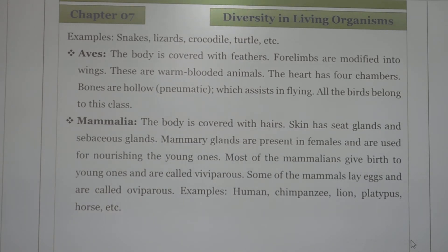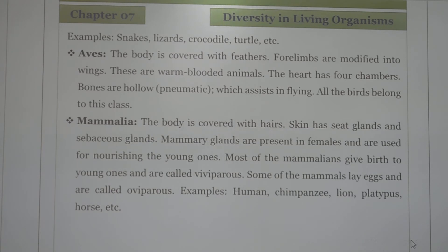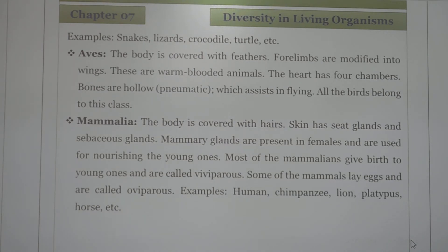Last class is Mammalia. The body is covered with hair. Skin glands — sweat glands and sebaceous glands — are present. Mammary glands are present in females and are used for nourishing the young ones. Most mammals give birth to young ones and are called viviparous. Some mammals lay eggs and are called oviparous. Examples include humans, chimpanzees, lions, platypus, and horses.